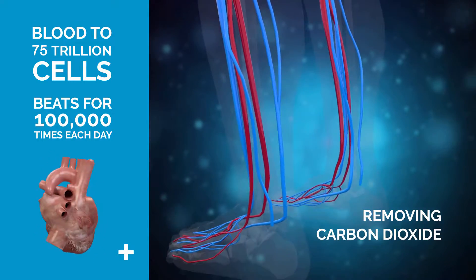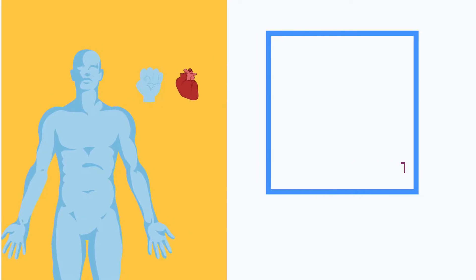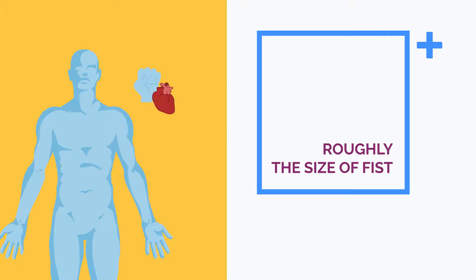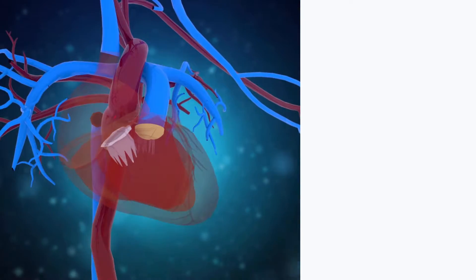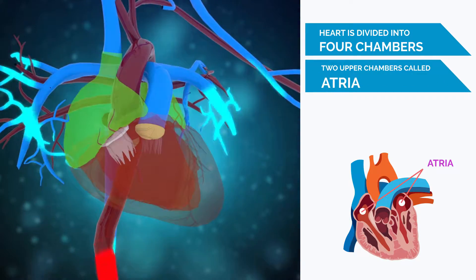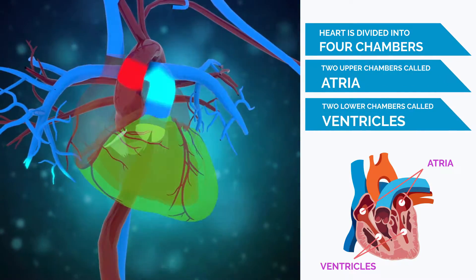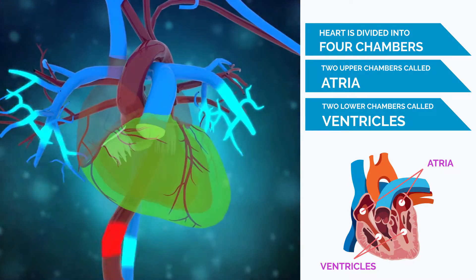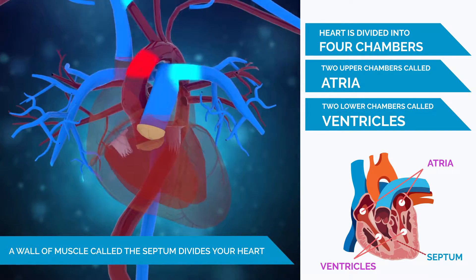The human heart is roughly the size of a large fist and is located just behind and slightly left of your breastbone. Your heart is divided into four chambers: two upper chambers called the atria and two lower chambers called the ventricles. A wall of muscle called the septum divides your heart.